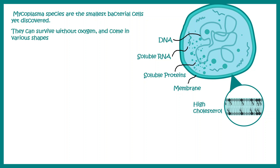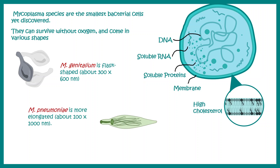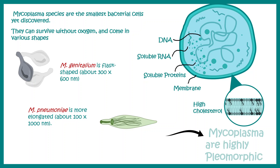They can survive without oxygen and they can come in different shapes. For example, M. genitalium is a flagship bacteria whereas M. pneumoniae is more elongated in shape. So they can change their shape and size. This is basically the nature of highly pleomorphic organisms.